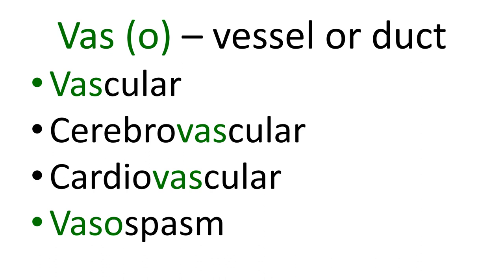Cerebrovascular — cerebro comes from cerebrum, to do with the brain — describes the blood vessels taking blood to and from the brain. A cerebrovascular accident is where there is pathology in the cerebral vessels, normally the arterial vessels. There might be a thrombus followed by embolisation, reducing or cutting off blood supply to parts of the brain, resulting in a CVA. Or there could be an aneurysm in a cerebral vessel causing a cerebral haemorrhage. These pathologies are why we call them cerebrovascular accidents.